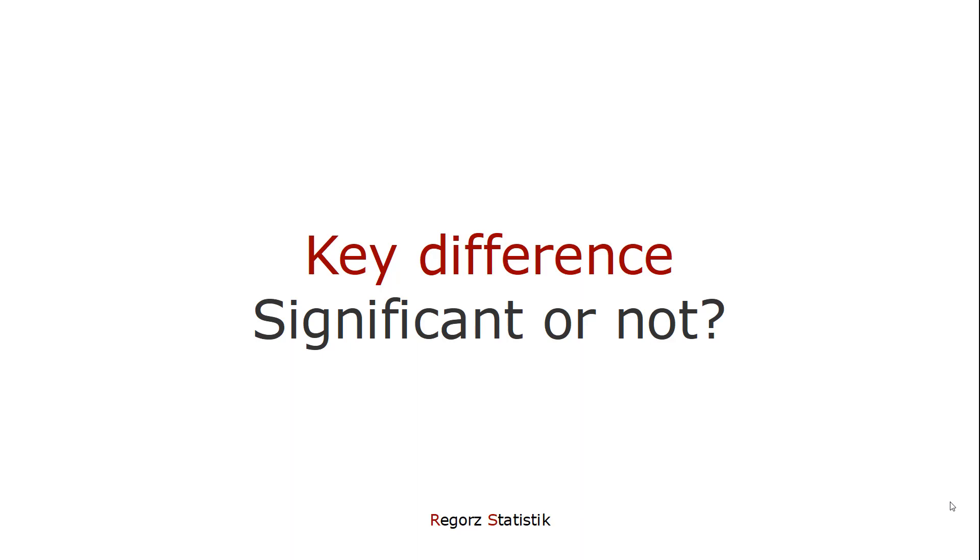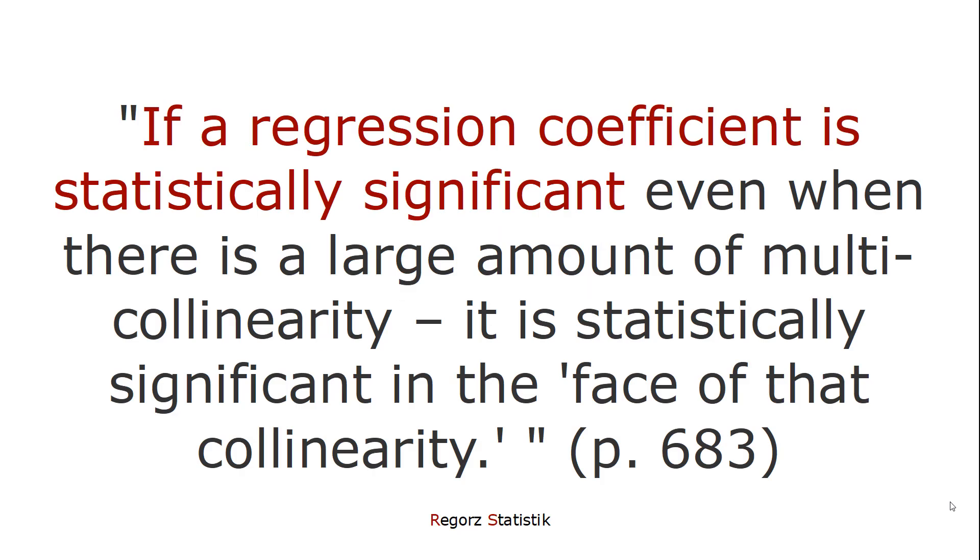The key difference you have to keep in mind is, are your results significant or not? Because if they are significant, even though the variance of the standard error is inflated, it's still significant. Or again in O'Brien's words, if a regression coefficient is statistically significant, even when there is a large amount of multicollinearity, it is statistically significant in the face of that collinearity.